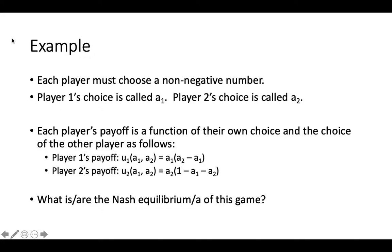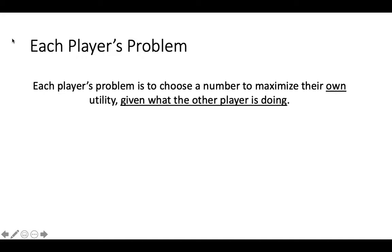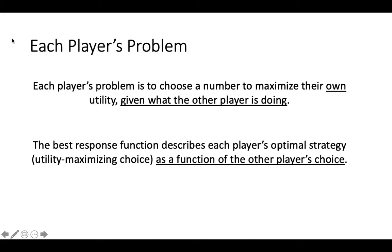Remember, there might be more than one Nash equilibrium. Before we jump into solving the game, it is helpful to consider exactly what each player's problem is. Each player's problem is to choose a number that maximizes their own utility given what the other player is doing. Thus, the best response function will describe what number each player should choose to maximize their utility as a function of the other player's choice.